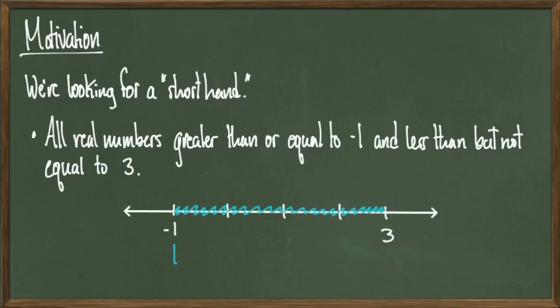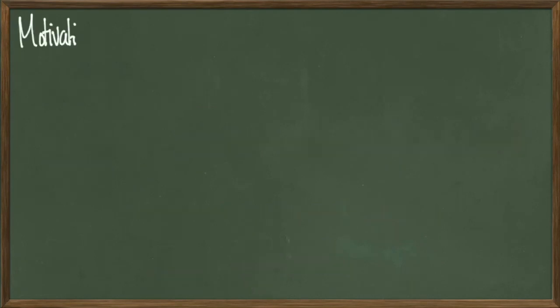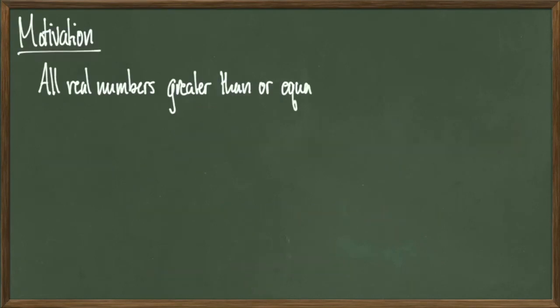One thing that I could try to do is draw this — sketch some crude representation of the number line and highlight what I need, pointing arrows to what is included and what is not included. But even then, this is a little messy, and in terms of just note taking, this is inefficient. So let's talk about how to fix this.